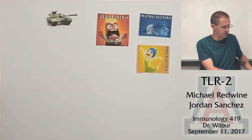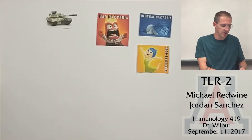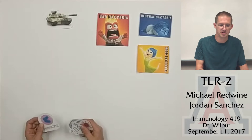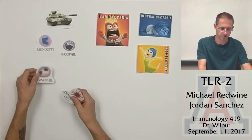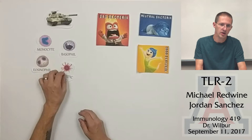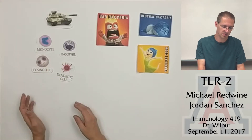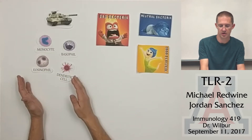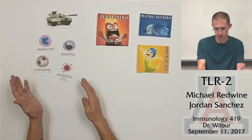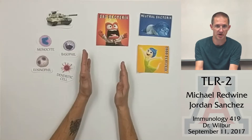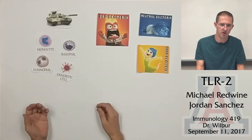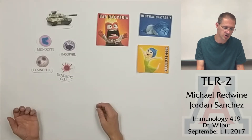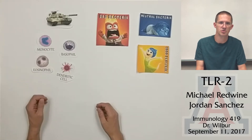Our immune system consists of many different types of defense molecules. The sole purpose of these defense molecules is to destroy the bad bacteria that wants to make us sick and die. Well, how does that work? Let's go ahead and zoom in a little bit and take a look.